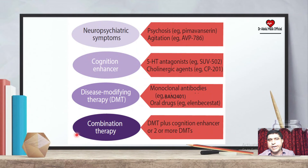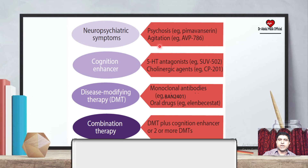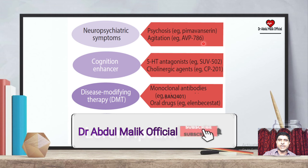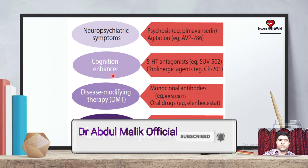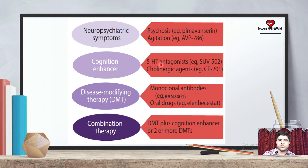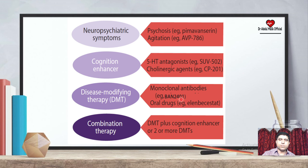On the last slide, neuropsychiatric symptoms include psychosis, for which Pimavanserin is used; agitation, for which AVP-786 is under study; and cognitive enhancement, for which a 5-drug serotonin antagonist SUV502 and full agonist CP-201 are under trial. Disease-modifying therapy (DMT) includes monoclonal antibodies such as Aducanumab.